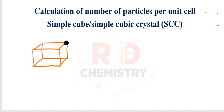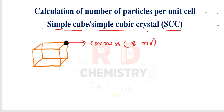The first trick is the calculation of number of particles per unit cell. In the simple cubic crystal (SCC), particles are present at the corners. There are 8 corners, and each corner particle is shared with 8 other unit cells. Therefore the contribution of the 8 corner particles per unit cell equals 1/8 × 8 = 1.